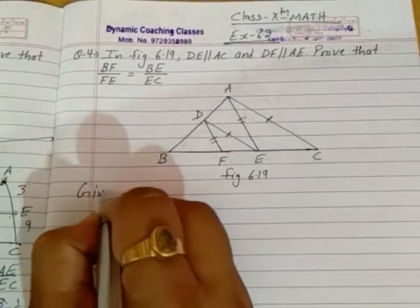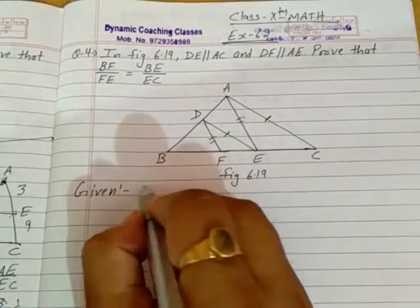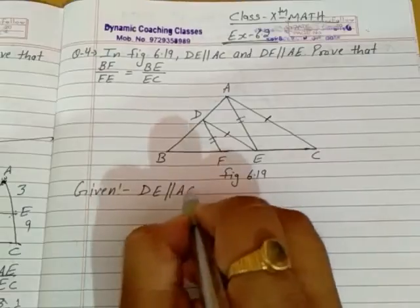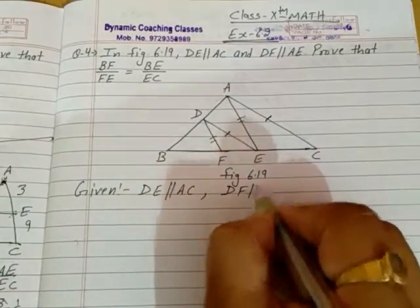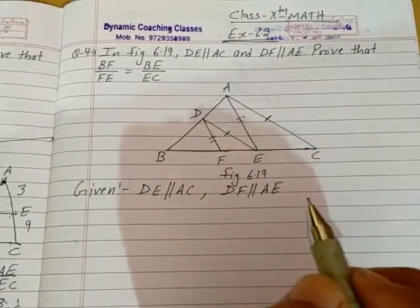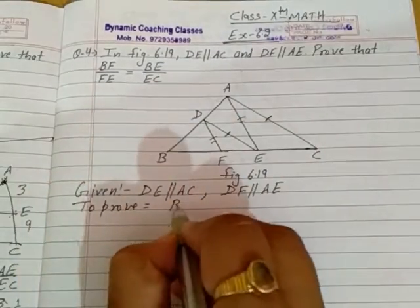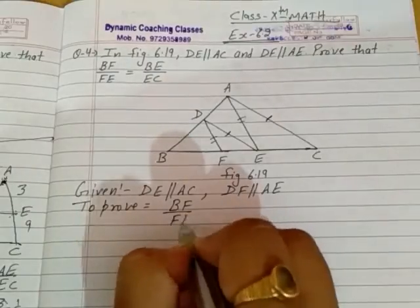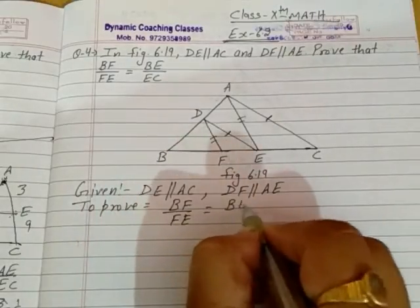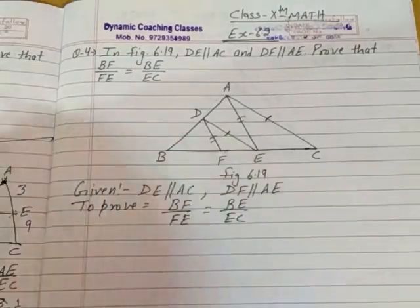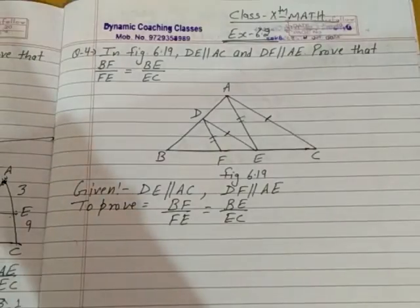Given: DE parallel to AC and DF parallel to AE. To prove: BF/FE equals BE/EC. This is what we have to prove. How to do it?